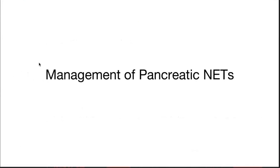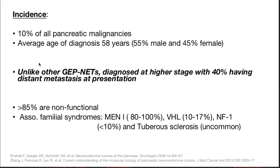Coming to pancreatic neuroendocrine tumors — these constitute 10% of all pancreatic malignancies. Unlike other GEP-NETs, they are diagnosed at a higher stage, with nearly 40% having distant metastasis at presentation. 80 to 85% are non-functional and 15 to 20% are functional, associated with MEN1 in 80 to 100% of cases, 10 to 15% VHL-associated, less than 10% NF1, and tuberous sclerosis is uncommon.